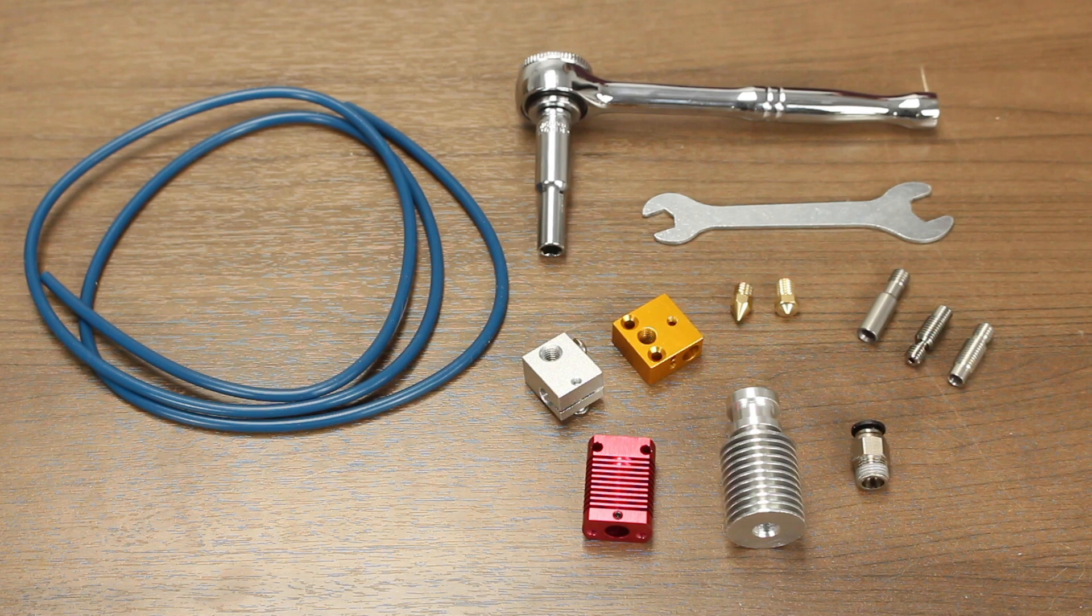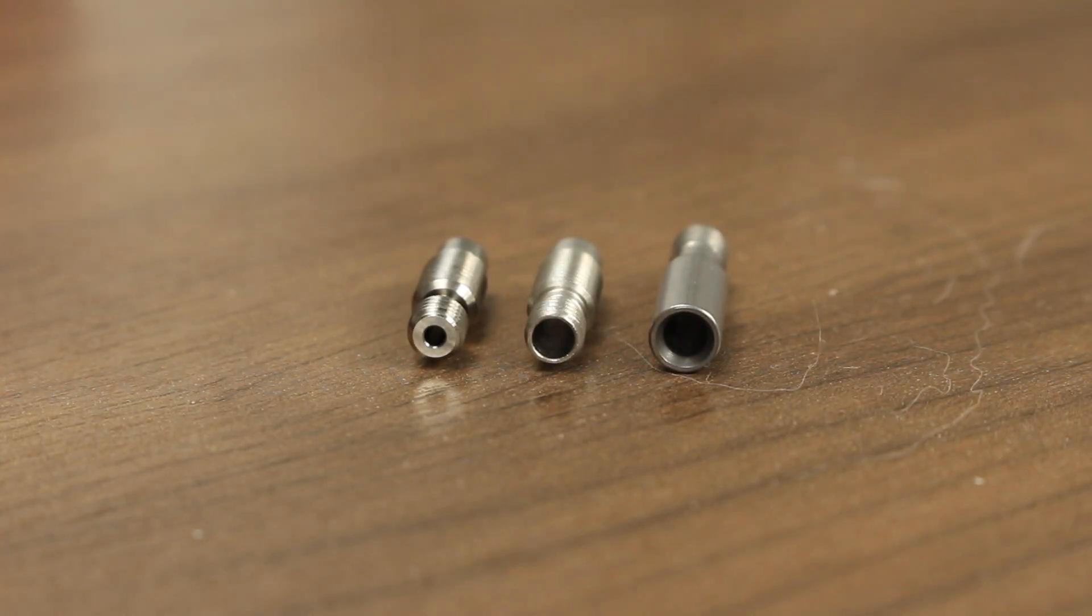You may have heard of hot ends being either PTFE lined or all metal. This is referring to the heat break of the hot end, which is the small thin tube that screws between the heat sink and the heat block. An all metal hot end has a 1.75mm hole machined in the heat break that goes down to meet the nozzle directly. A PTFE heat break will have a much larger hole designed to accommodate a PTFE tube.